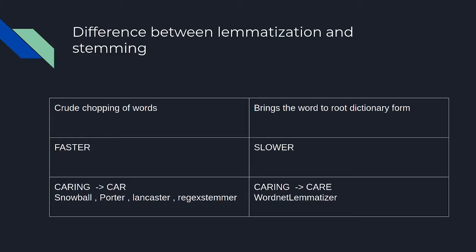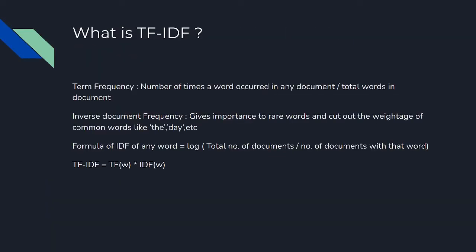They then moved to NLP. First question: what is lemmatization and stemming? Stemming is the chopping of words to their root form, while lemmatization brings words to their root dictionary form. Stemming is fast while lemmatization is slower. For example, the word 'caring' — a stemmer would reduce it to 'car', while lemmatization would correctly reduce it to 'care'. Different stemmers include Snowball, Porter, Lancaster, and Regex.